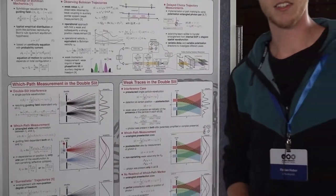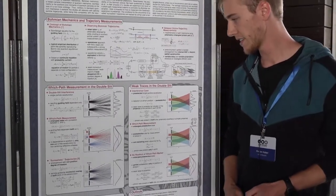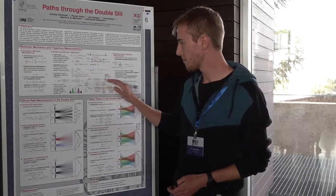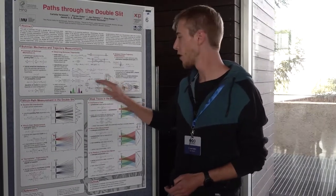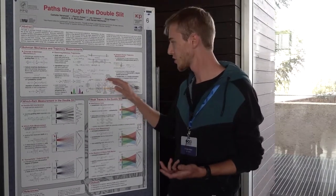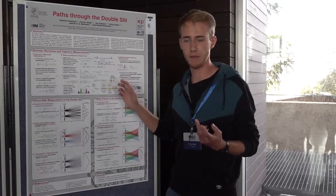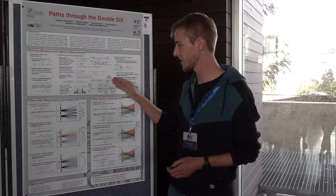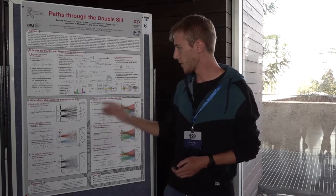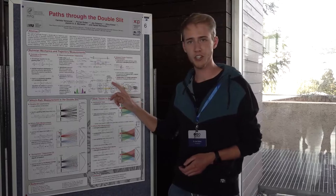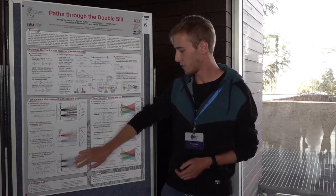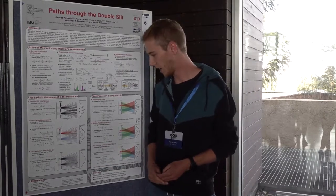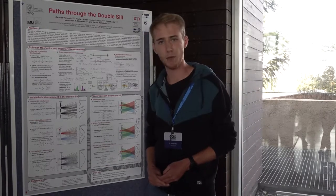The third case is the so-called surrealistic case. In this case we do not measure the second photon. We store the polarization information — and so also the which-path information — in the second photon, and we measure the polarization after the photon position was detected in the double-slit experiment.